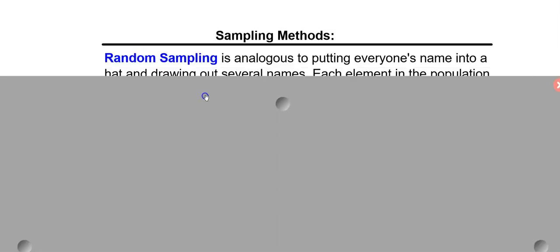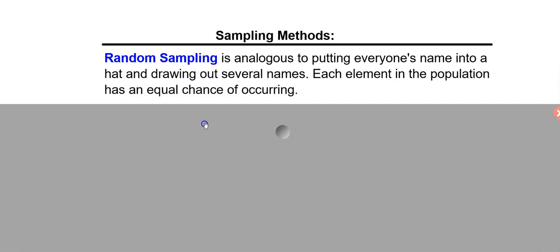So there are a few ways we can do this. One way is random sampling. Statisticians, we love to do things randomly. One way of doing this would be put everyone's name in a hat at St. Mary's or something and draw names out of the hat randomly. The key idea here is that each element of the population has an equal chance of occurring, of getting picked. So you have the same likelihood of getting picked for the sample as anyone else at school.